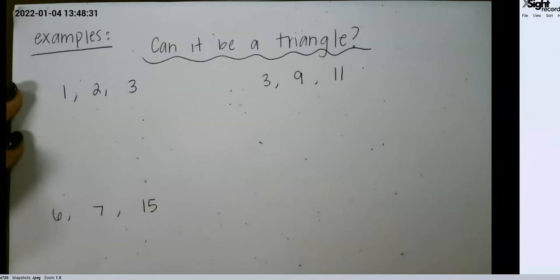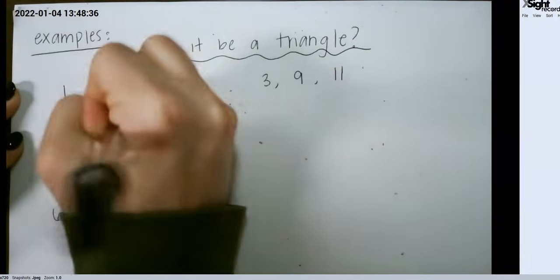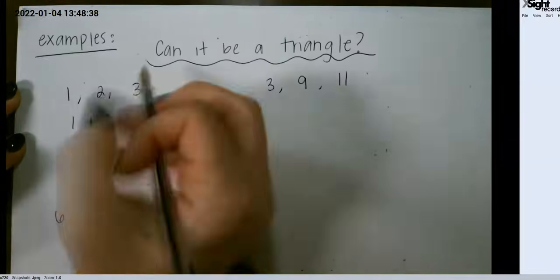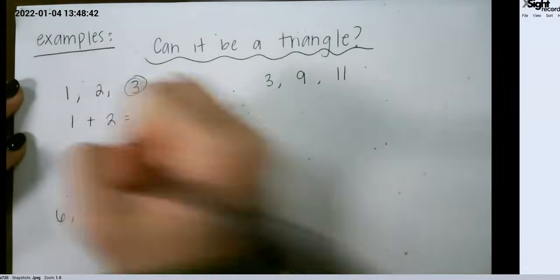So let's look at some examples. If we add up any two sides, they must be greater than the third side. They cannot be equal, so this cannot make a triangle.